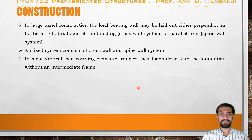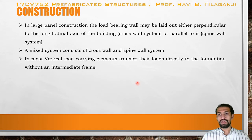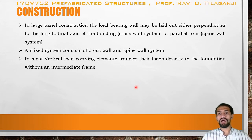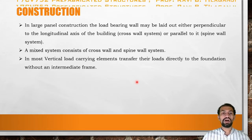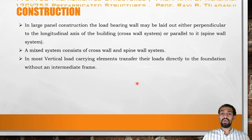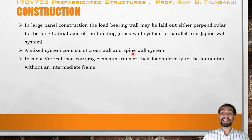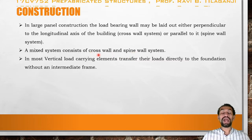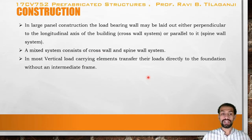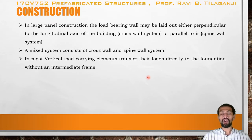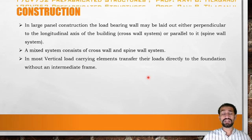In large panel construction, the load-bearing wall may be laid out either perpendicular to the longitudinal axis of the building — called the cross wall system — or parallel to it, called the spine wall system. A mixed system consists of both cross wall and spine wall systems. The external walls are called the spine wall system, and the partitions are known as cross wall systems. Most vertical load-carrying elements transfer their loads directly to the foundation without an intermediate frame.